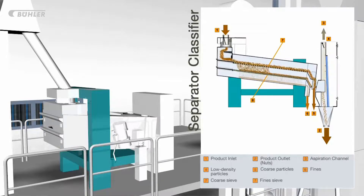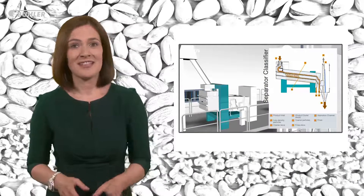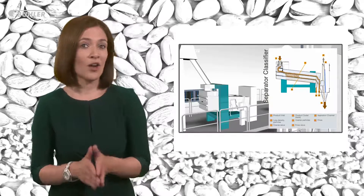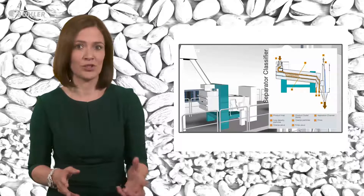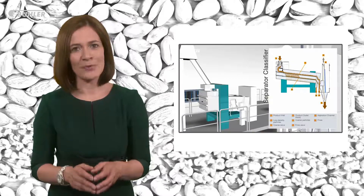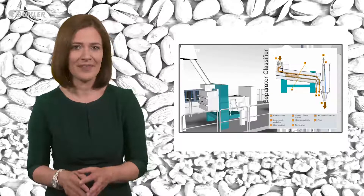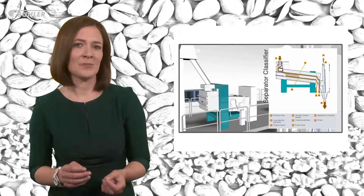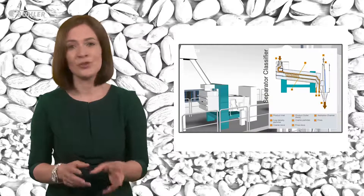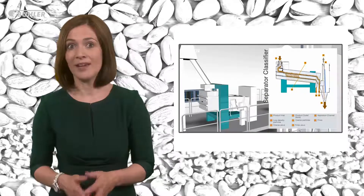The accept stream then passes the aspiration system in which an adjustable airflow is used to achieve a separation of light particles from the good product. The main benefit of the separator is that it can remove foreign bodies that are either smaller or larger than the good product itself, like sticks, wood shavings, sand and larger stones. In addition the aspiration system removes light particles. The main limitation is that it cannot remove foreign bodies which are of a similar size and density to the nut product — shell being a good example.